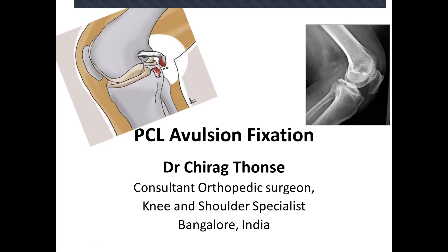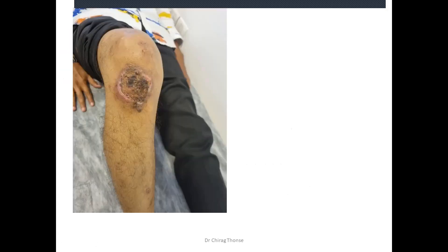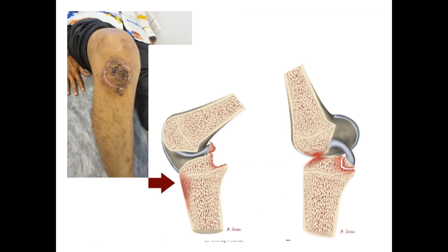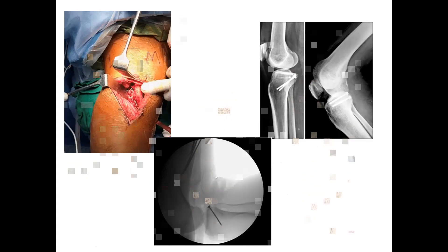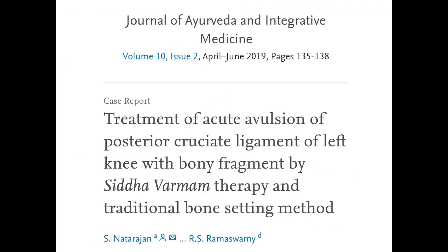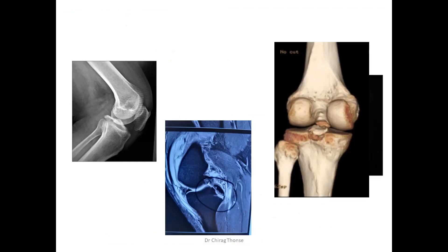I will be speaking on PCL avulsion fixations. PCL avulsion fractures are usually a consequence of high-velocity trauma — either a direct blow to the anterior aspect of the knee joint or a hyperextension injury. Various fixation techniques have been described in the past, including open fixation of the PCL, as well as certain bone-setting techniques described in non-allopathy journals.